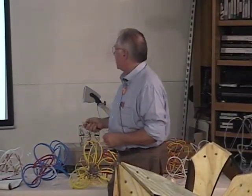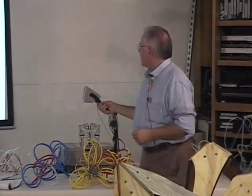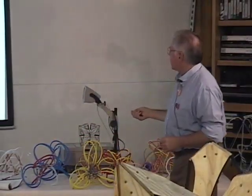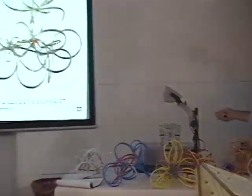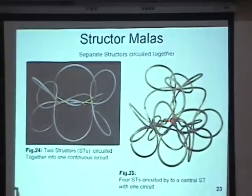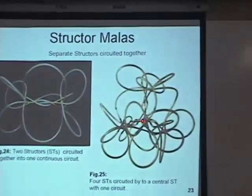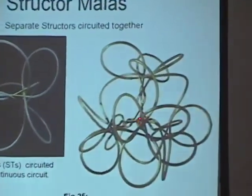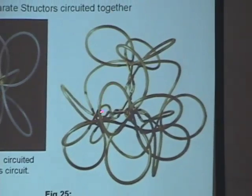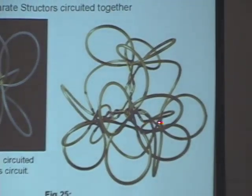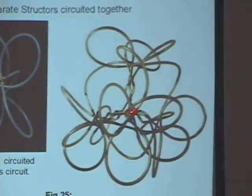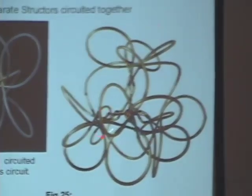This one here has five loops: one tetrahedron in the center and four on the outside, and that's all one loop, one circuit.